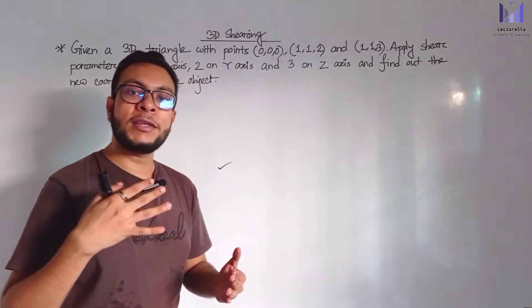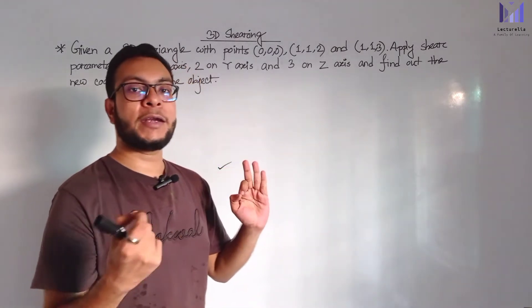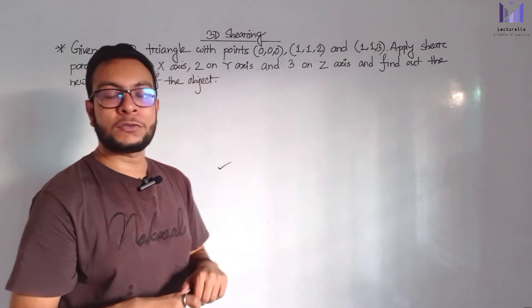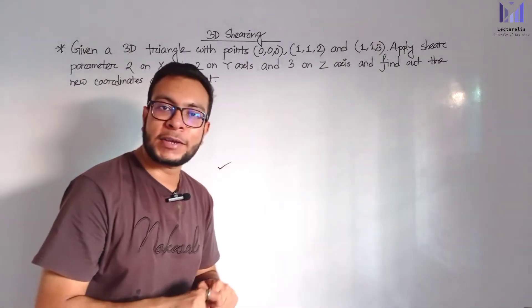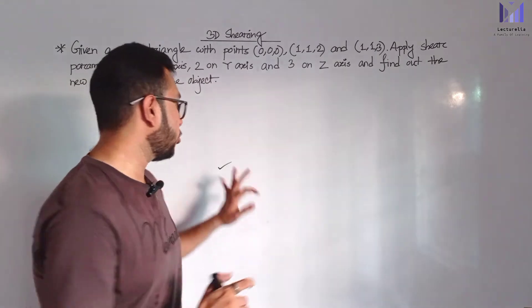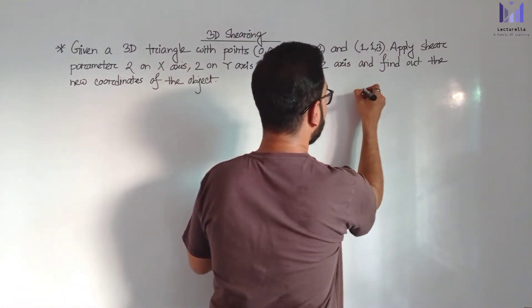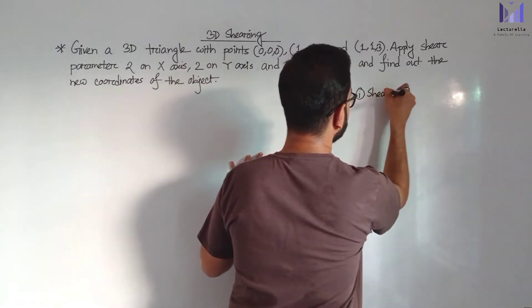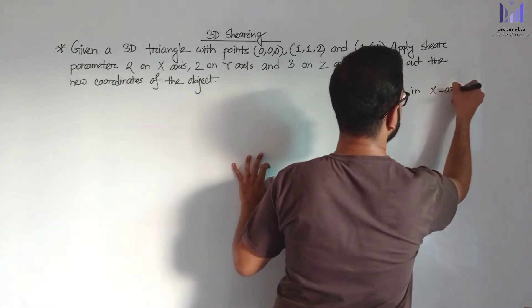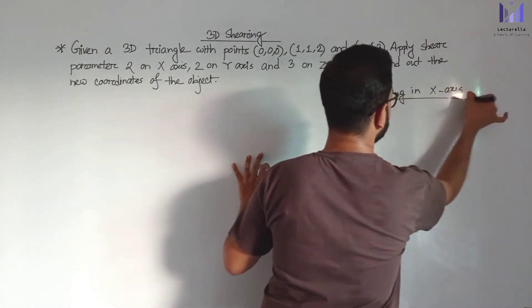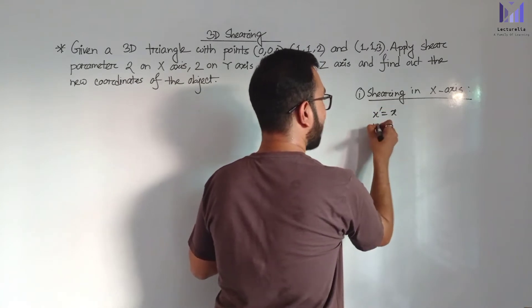We have the XYZ shearing: shearing in X-axis, shearing in Y-axis, and shearing in Z-axis. The equation for each axis — first of all we can have the X-axis shearing. The X new point from the old point using the shearing formula.